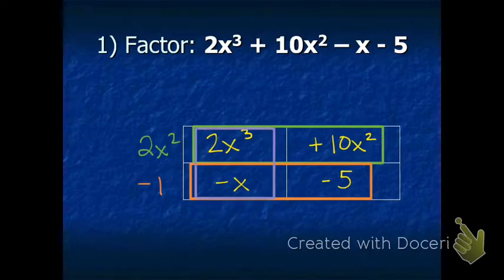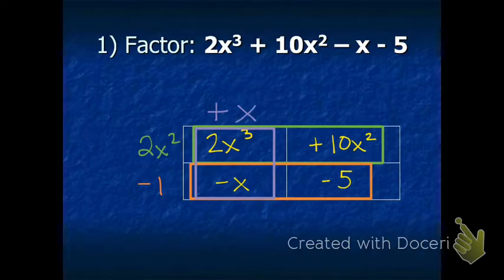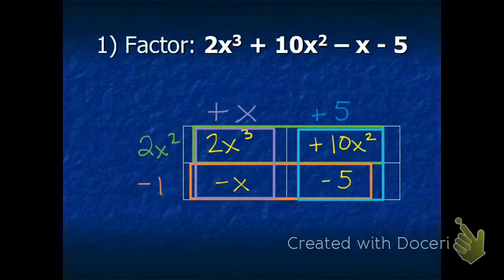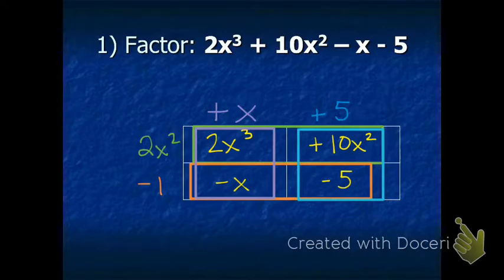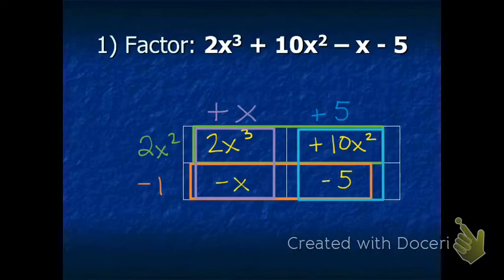Now I'll do the third binomial — the vertical one: 2x to the third and negative x. The greatest common factor of that is positive x. The fourth binomial is positive 10x squared and negative 5, and the greatest common factor is plus 5. Notice that the purple plus x and the blue plus 5 are both positive. The orange negative 1 is negative because both terms — negative x and negative 5 — had a negative in them. The greatest common factor is negative when both terms share a negative sign.